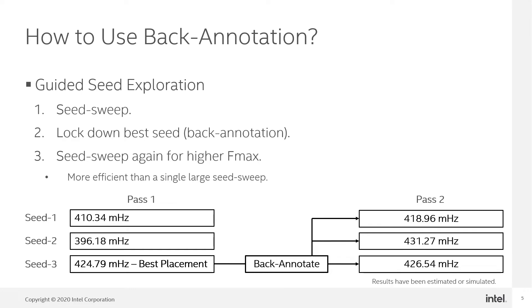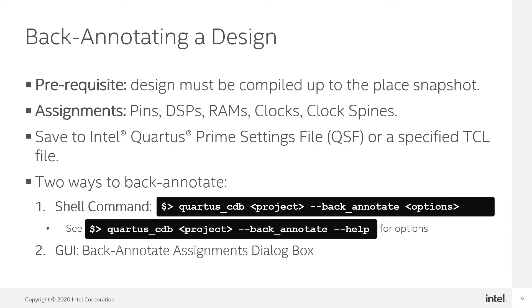Backannotation is most often used in guided seed exploration. Conceptually, guided seed exploration is a workflow where seed sweeps are done in two passes. An initial seed sweep is conducted to explore the design space and find good placement of resources. Once it is complete, the best known placement in the first sweep is locked down to help guide the fitter to explore similar solutions in search of higher fmax in a second sweep.